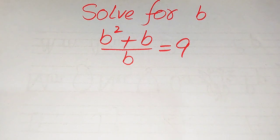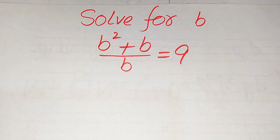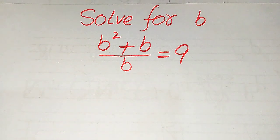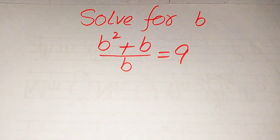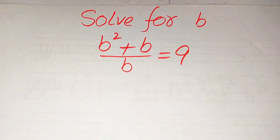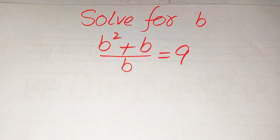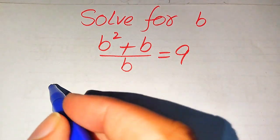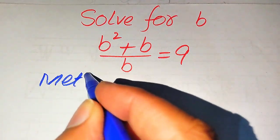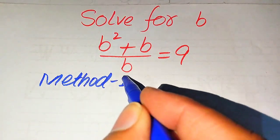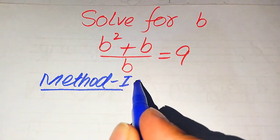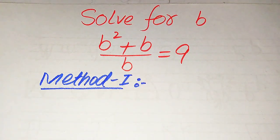Hello everyone. How to solve this problem: for the values of b, if we have b squared plus b divided by b equals 9, we solve this problem for all the values of b. First we need to find all the roots of this equation, and at the last we will verify which of the roots are solutions and which are extraneous roots. We solve this problem using two methods.